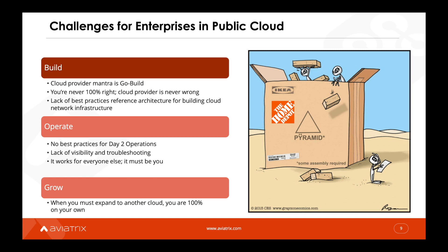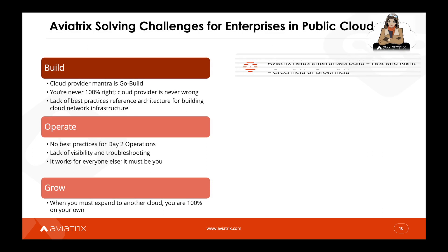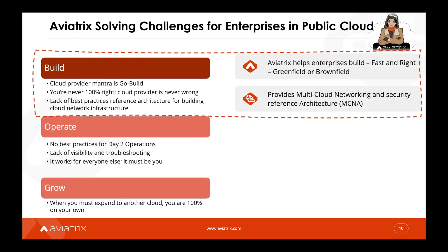These are the biggest challenges enterprises face when going to the public cloud. Now let's see how Aviatrix can help. Aviatrix helps businesses build the right way — the enterprise-grade way — in a secure and agile manner. We don't just work on a use-case implementation basis; instead, we follow an architectural approach. Our reference architecture is called Multi-Cloud Network Architecture, or MCNA, and it helps ensure you're not locked into any single CSP vendor. With MCNA, you're able to securely build, operate, and grow in a repeatable and deterministic manner as your business dictates.